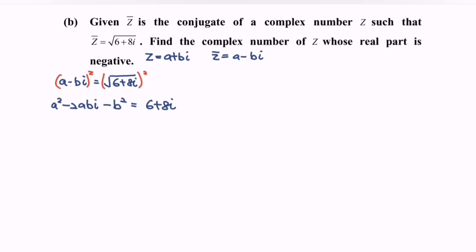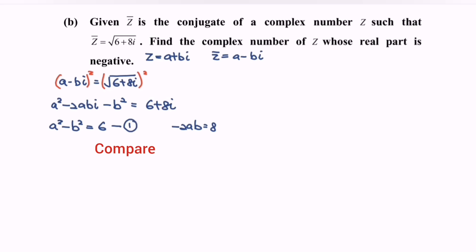Then compare the real and imaginary parts. The real part gives us a squared minus b squared equals 6 — call this the first equation. The imaginary part gives negative 2ab equals 8. We can simplify this to ab equals negative 4 — call this the second equation.